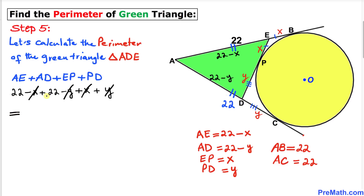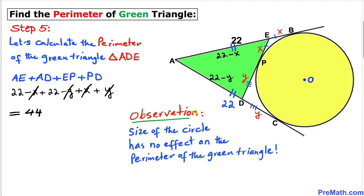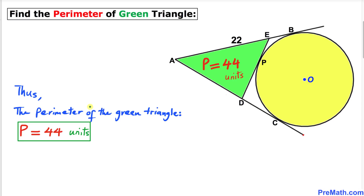Here's a very important observation: the size of the yellow circle has no effect whatsoever on the perimeter of this green triangle. The perimeter of the green triangle turns out to be 44 units. Thanks for watching, and please don't forget to subscribe to my channel for more exciting videos.